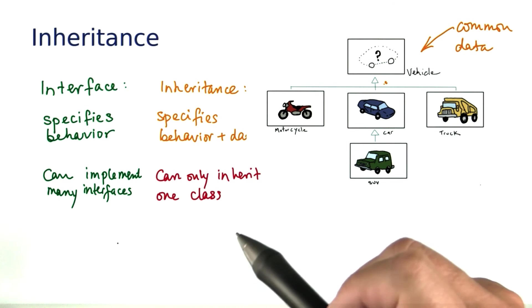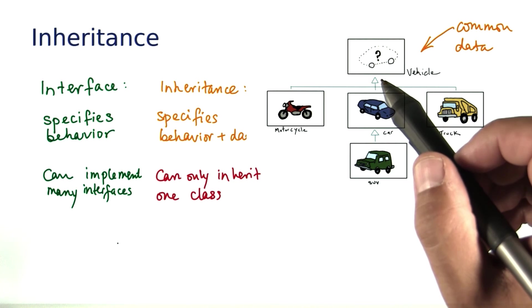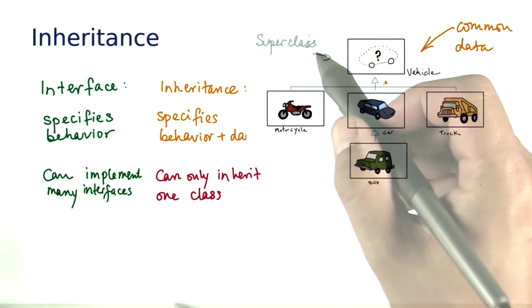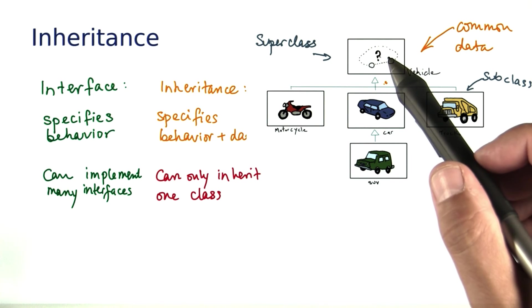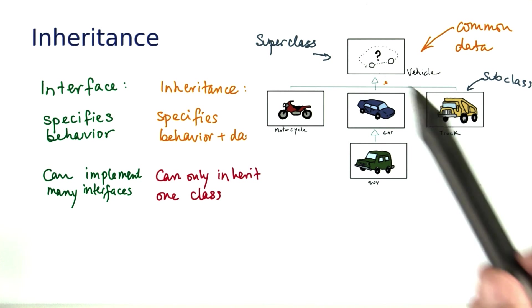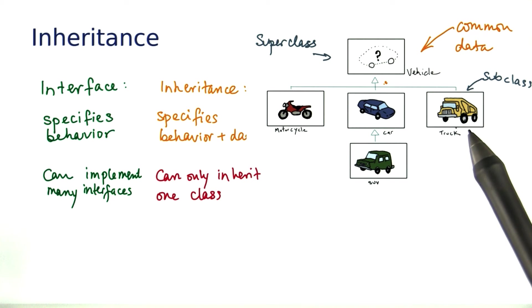A bit of terminology. The class from which one inherits is called the superclass, and the class that does the inheriting is called the subclass. We would say truck is a subclass of vehicle. Vehicle is a superclass of truck.